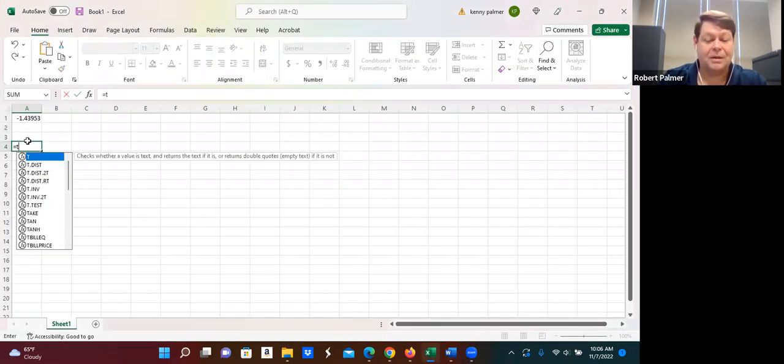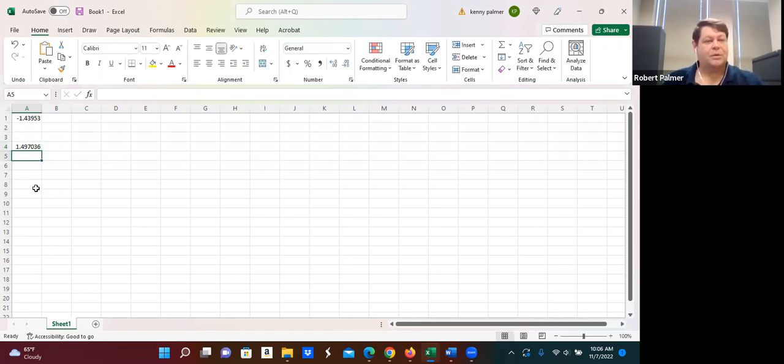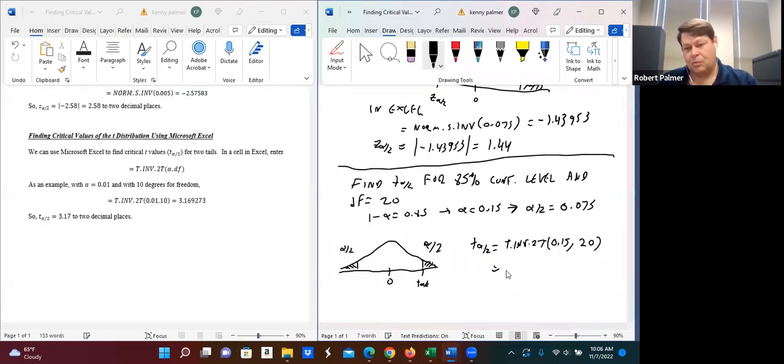Start at the top of that. T.INV.2T. And we said our alpha was 0.15 and degrees of freedom were 20. And so that's going to be 1.497036. And so that's going to be approximately, let's do two decimal places, 1.50.